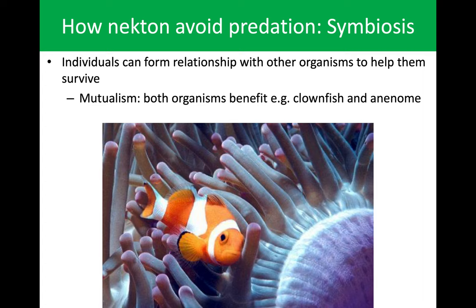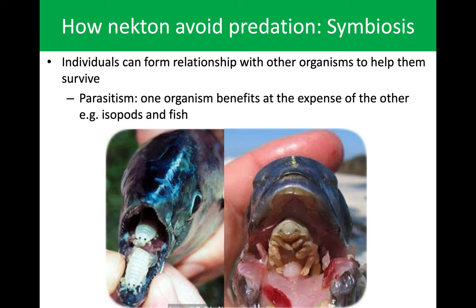The final one is parasitism — basically when one organism benefits at the expense of another. The health of the host is going to deteriorate because the parasite has taken hold. In this case, an isopod has taken up in the mouth of a fish and is stealing a good portion of the food that the fish is trying to eat. The fish will hunt, pull prey into its mouth, that isopod will intercept that prey, ultimately keeping the fish from receiving those nutrients.